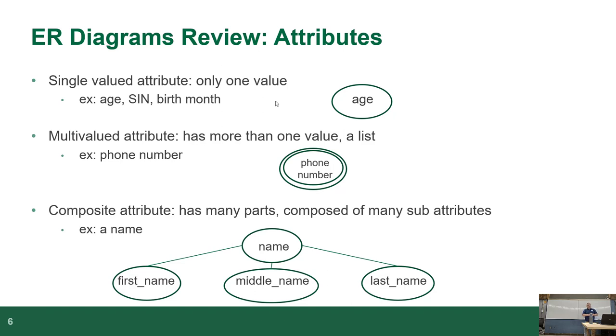Attributes, there's a few different kinds. Single-valued attributes, there's only one value. And this is where the terminology that was used in this course is a little misleading. They use the phrase multi-valued attribute, which is a thing that has more than one value, also known as a list.